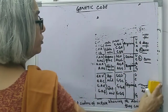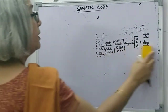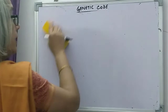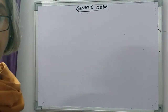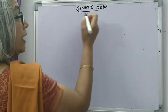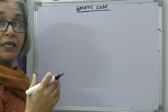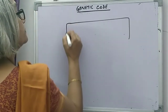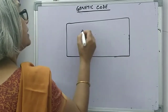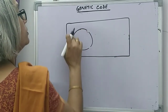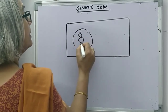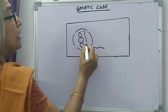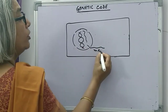Translation is the synthesis of protein. When I was explaining the central dogma, I told you how DNA inside the nucleus forms RNA and how RNA codes for protein, and how the expression of DNA is always in the form of a protein. DNA inside the cell by means of transcription produces mRNA. This mRNA leaves the nucleus through the nuclear pores.